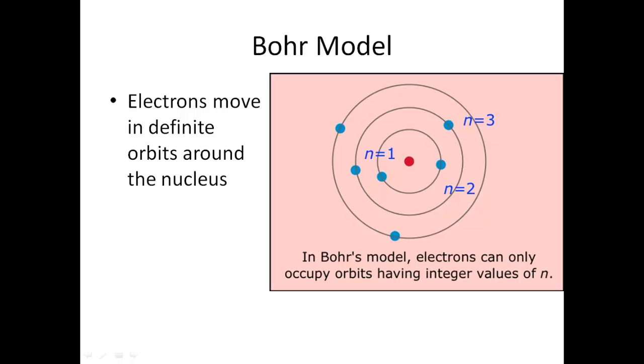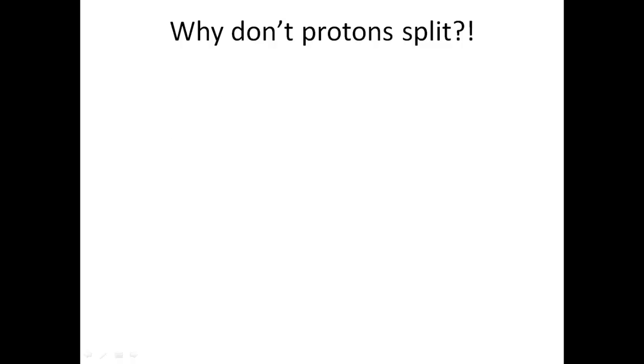Bohr discussed how electrons move in definite paths. We incorrectly call them orbits around the nucleus. We do use this model to this day. It's very useful, but do realize it's just a model. It's not how it really looks in real life.